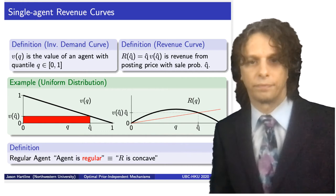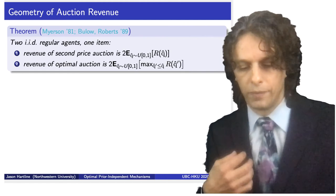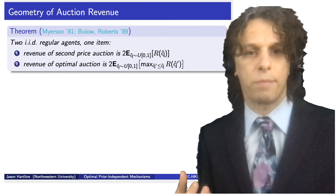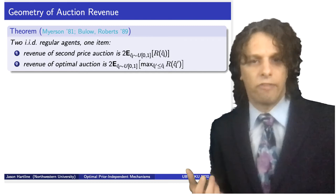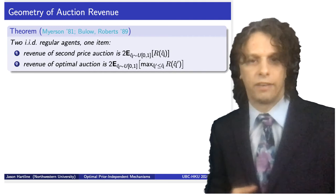I'll now give the warmup proof that the second price auction is a prior independent 2-approximation to the optimal auction in the two-agent IID regular case. I'll present a very geometric proof due to D'Aguanote et al. Some basic properties from auction theory, taking Myerson's 1981 analysis and reinterpreting it using the Bulow-Roberts approach, give us the following.